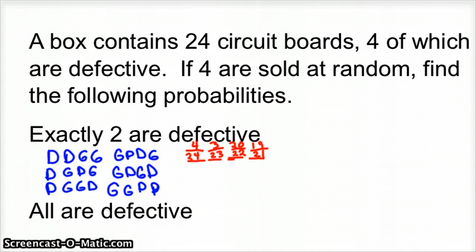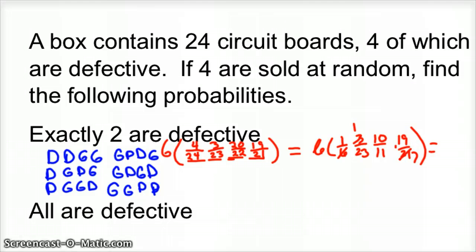And so that's the probability. All six of these probabilities will be the same. And so we would take this times six because there's six of those orders and reduce it. So you'd have six times 1/6 times 3/23 times 10/11 times 19/21. These sixes cancel, 21 and 3 is 1 and 7. And you do all your multiplication and you get 190 over 1,771. So that's the probability that exactly two are defective.